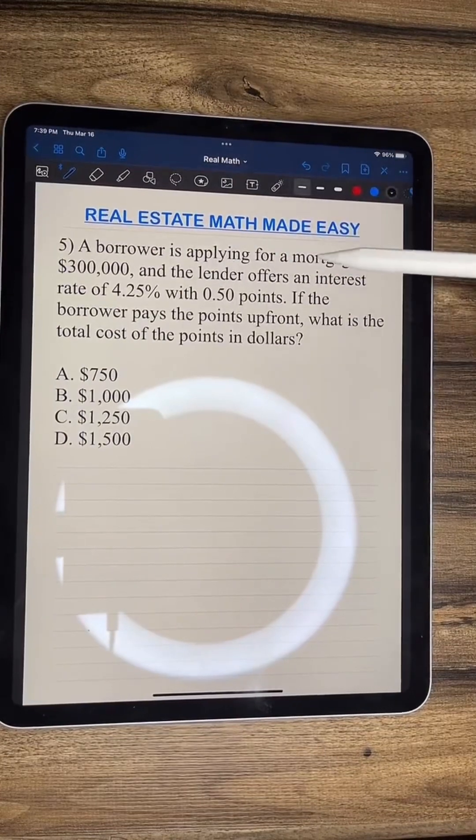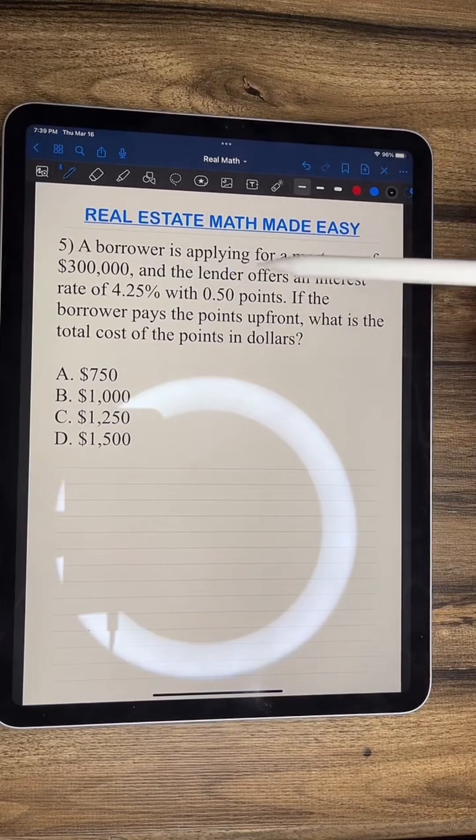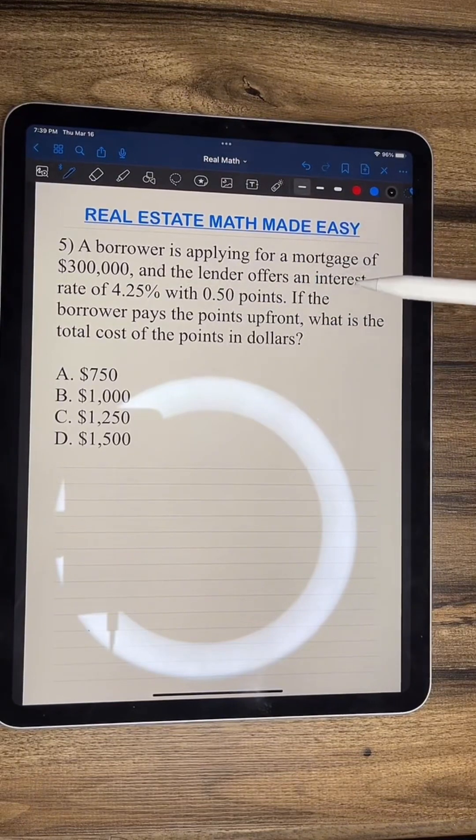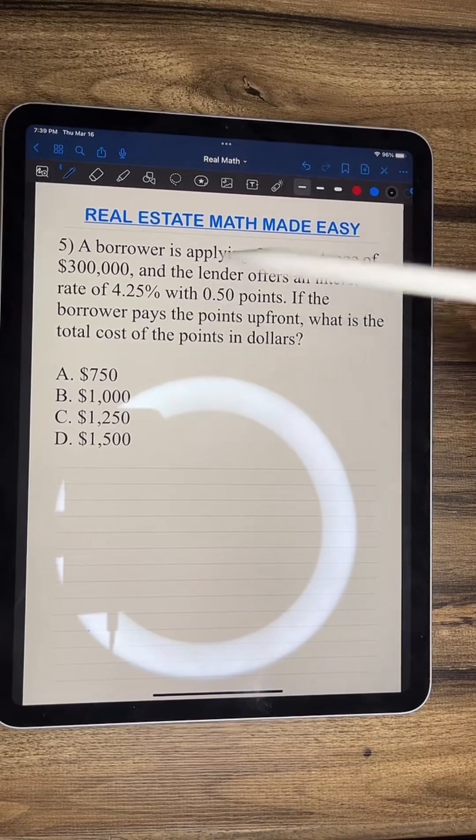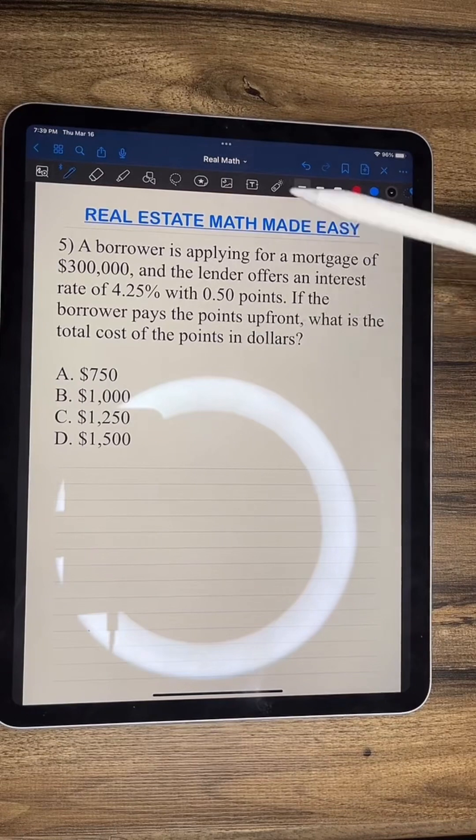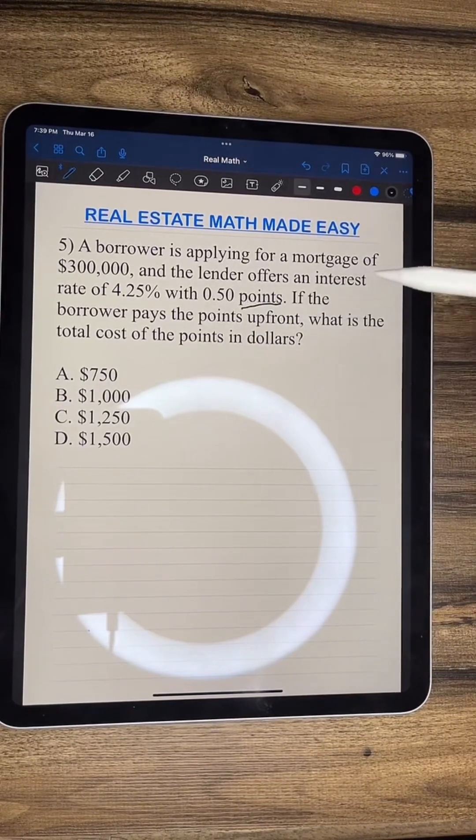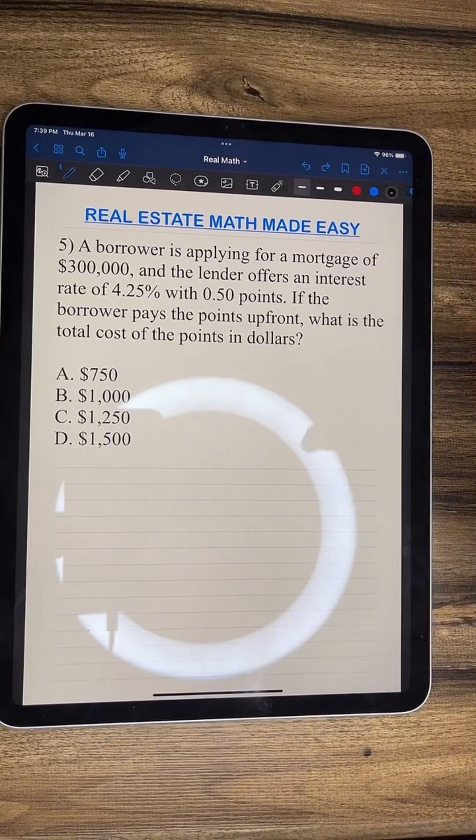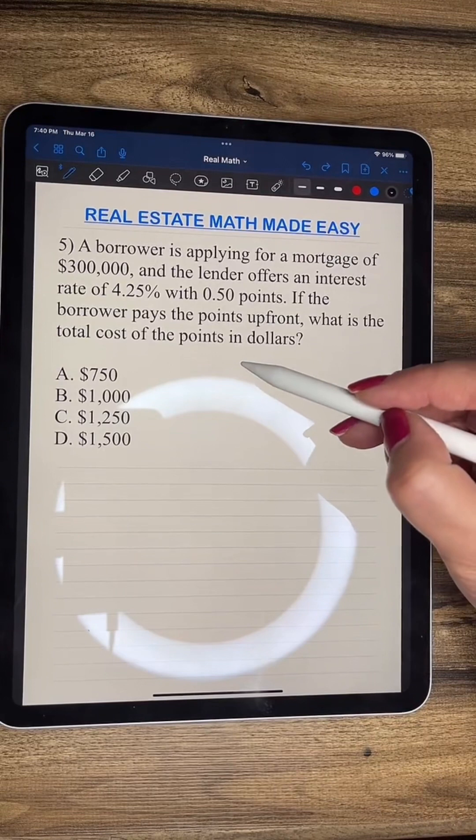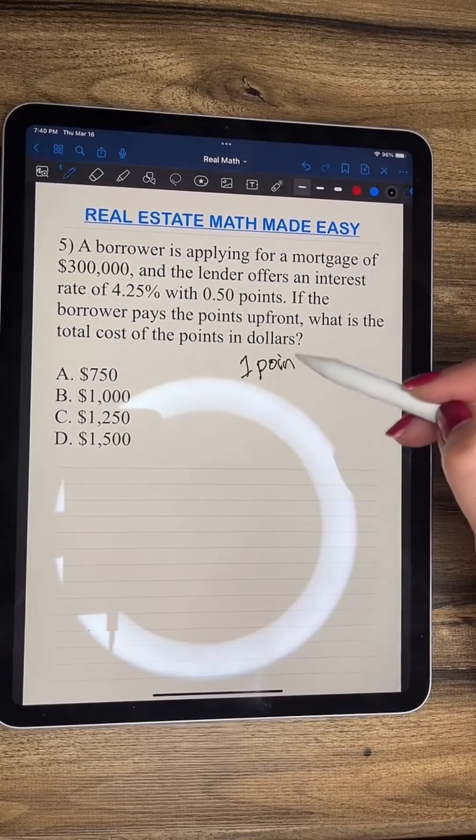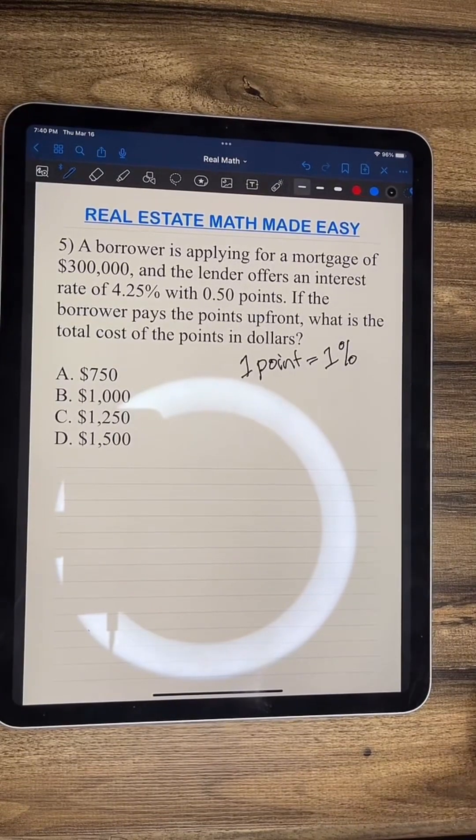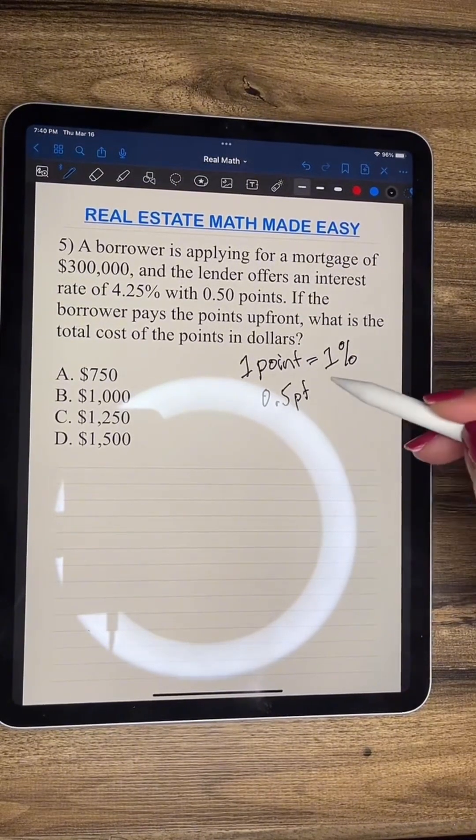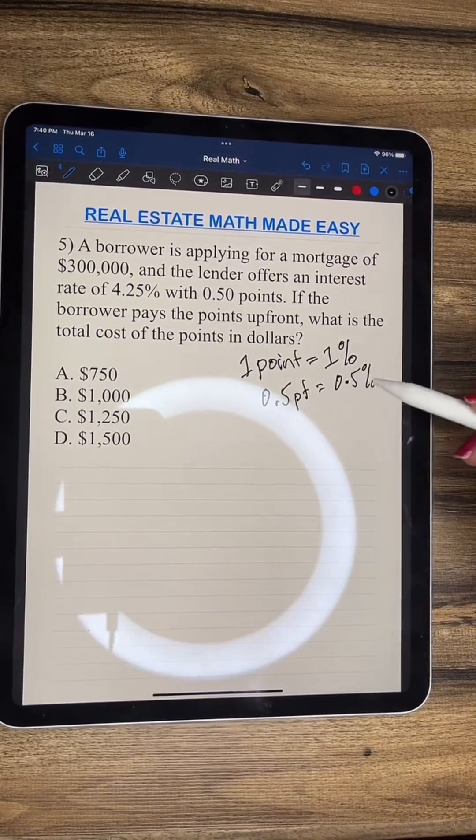It says here, a borrower is applying for a mortgage of $300,000, and the lender offers an interest rate of 4.25% with 0.50 points. If the borrower pays the points up front, what is the total cost of the points in dollars? Points, as it refers to here, is a mortgage term to where a buyer can purchase points to lower their interest rate. Let's remember that one point is equal to 1%. So if one point equals 1%, then 0.5 points is going to equal 0.5%.